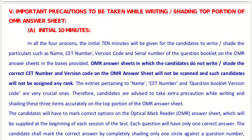The initial 10 minutes are meant for candidates to write or shade their details such as name, CET number, version code, and serial number of the question booklet on the OMR answer sheet. You must correctly write or shade the CET number and version code, otherwise the OMR will not be scanned and such candidates will not be assigned any rank. These entries are very crucial.